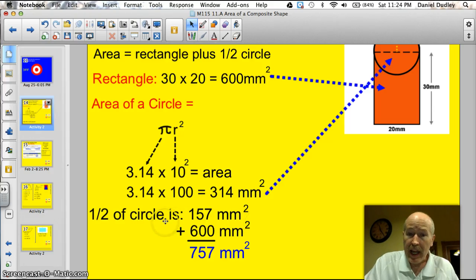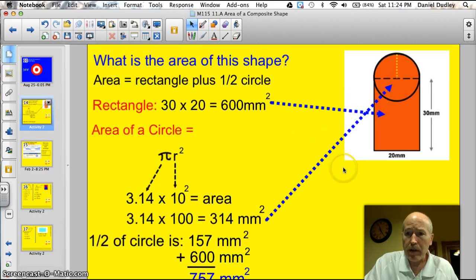I have to take half of that because I'm only using half of the circle. Half of 314 is 157. I add that to 600 and I get 757 millimeters squared. I found the area of the rectangle. I found the area of the circle. I cut the area of the circle in half. I added the two together. Sounds like a lot, but if you take it step by step, it's not that bad.